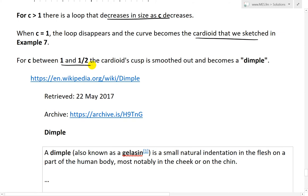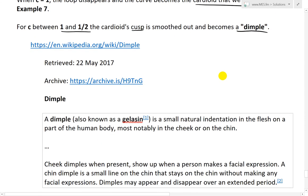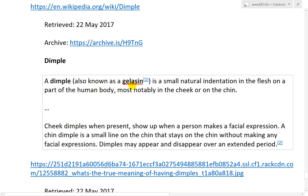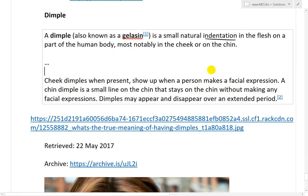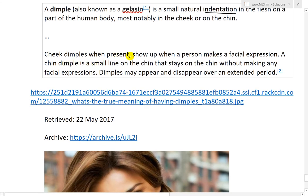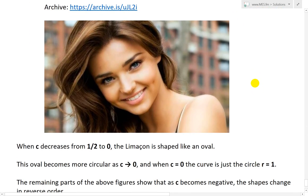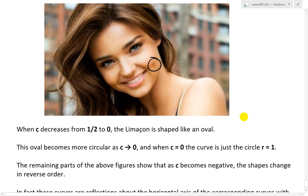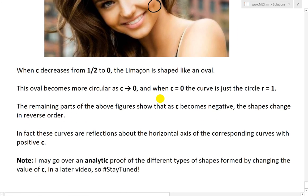So basically for c is greater than 1 there is a loop that decreases in size as c decreases. When c equals 1 the loop disappears and the curve becomes a cardioid that we sketch in example 7. For c is between 1 and 1 half the cardioid's cusp so it's not pointing anymore smoothed out and becomes a dimple. And like always when we come up across random topics just want to learn more about it. So dimple here on wikipedia dimple also known as gelasin or something is a small natural indentation in the flesh on a part of the human body most notably in the cheek or on the chin. Cheek dimples when present show up when a person makes a facial expression.